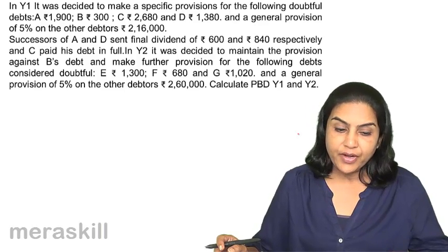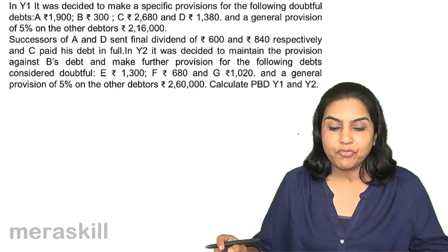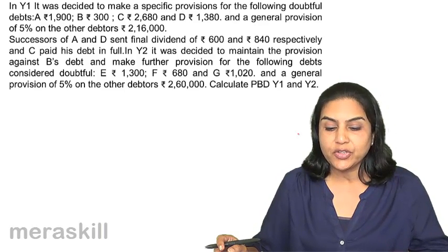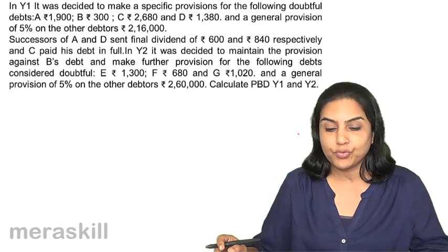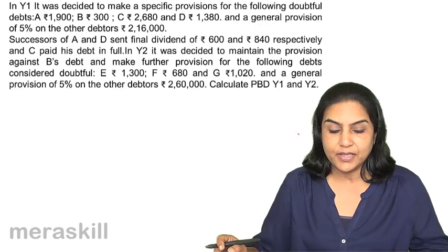There was also a general provision of 5% on the other debtors amounting to 2,16,000.